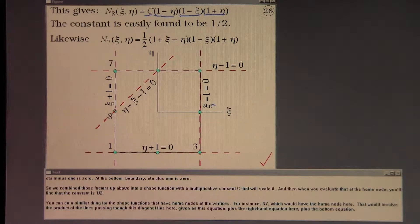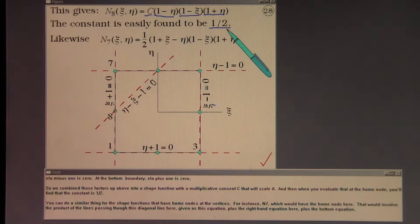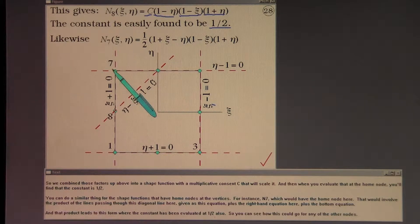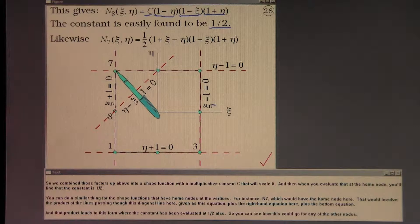At the home node you find that the constant is one-half. You can do a similar thing for the shape functions that have home nodes at the vertices.